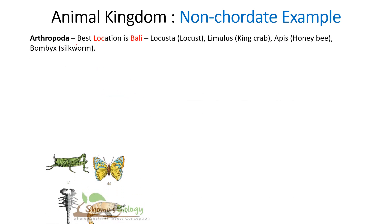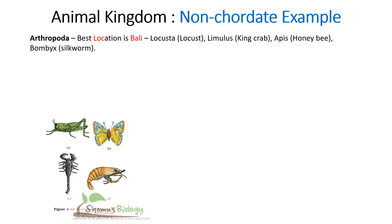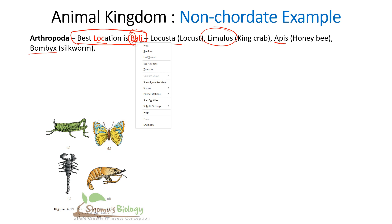For Arthropoda, remember 'Best location is Bali': LOC gives Locusta (locust); L-I gives Limulus; A gives Apis (bee); and B gives Bombyx (silkworm). We generally know Arthropod examples well since we encounter insects all the time, so these mnemonics make recall even easier.